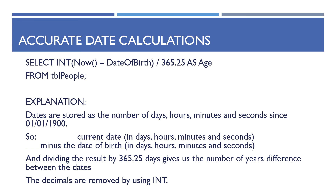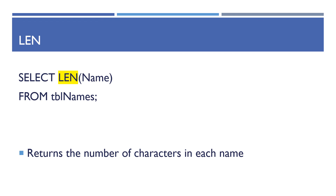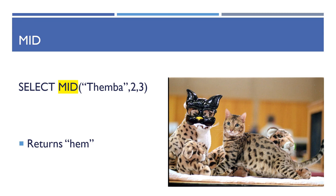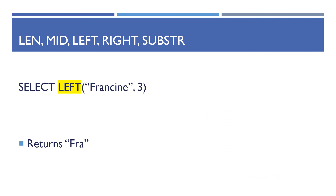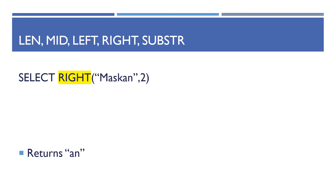String functions: LEN(name) returns the number of characters in a string. MID('timber', 2, 3) starts at position 2 — the letter 'h' — and returns 3 characters: 'hem'. Note this differs from Java's substring method — SQL is simpler. LEFT('Francine', 3) returns 'Fra' — the leftmost three letters. RIGHT('Maxscan', 2) returns the rightmost two letters.